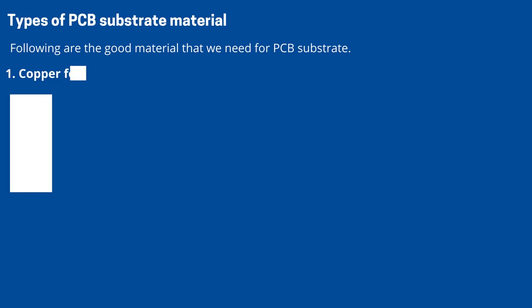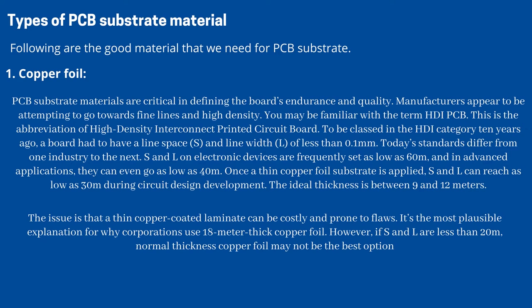Types of PCB substrate material include copper foil. PCB substrate materials are critical in defining the board's endurance and quality. Manufacturers are moving towards fine lines and high density, known as HDI-PCB — High Density Interconnect Printed Circuit Board. To be classified in the HDI category 10 years ago, a board had to have a line space (S) and line width (L) of less than 0.1 mm.